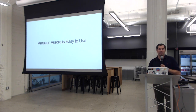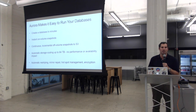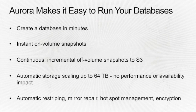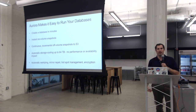On ease of use, Aurora is part of the RDS suite, so just like you can spin up an RDS database in minutes from the console, you'll do the same with Aurora. Instant volume snapshots are available through the console or API. Due to the log-structured storage property, we can do continuous incremental off-volume snapshots to S3 — great durability, since S3 is designed for 11 nines. Storage scales up to 64 terabytes with no performance or availability impact, in roughly 100 gigabyte chunks. Under the hood there's automatic restriping, mirror repair, and hotspot management — none of which you have to deal with.